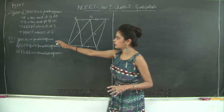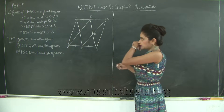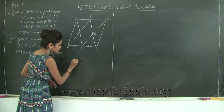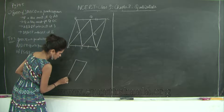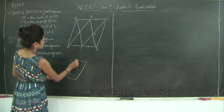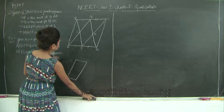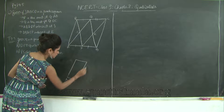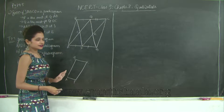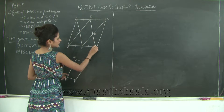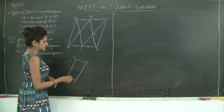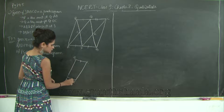Let us see how we will prove each one as a parallelogram. First, I need to prove that APCQ is a parallelogram. It is given that DC is parallel to AB. Therefore, since Q and P lie on DC and AB respectively, QC is going to be parallel to AP.